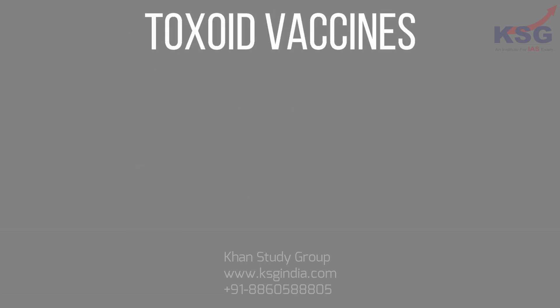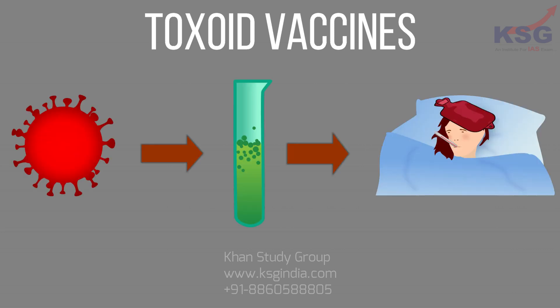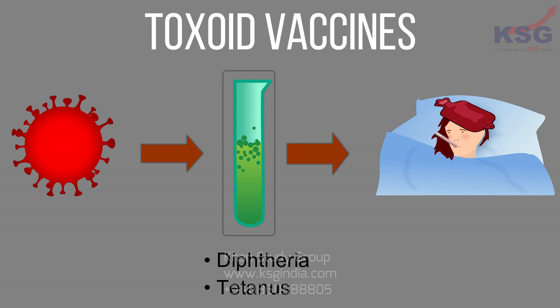Toxoid vaccines use a toxin made by the germ that causes a disease. They create immunity to the parts of the germ that cause disease instead of the germ itself. That means the immune response is targeted to the toxin instead of the whole germ. Toxoid vaccines are used to protect against diphtheria and tetanus.